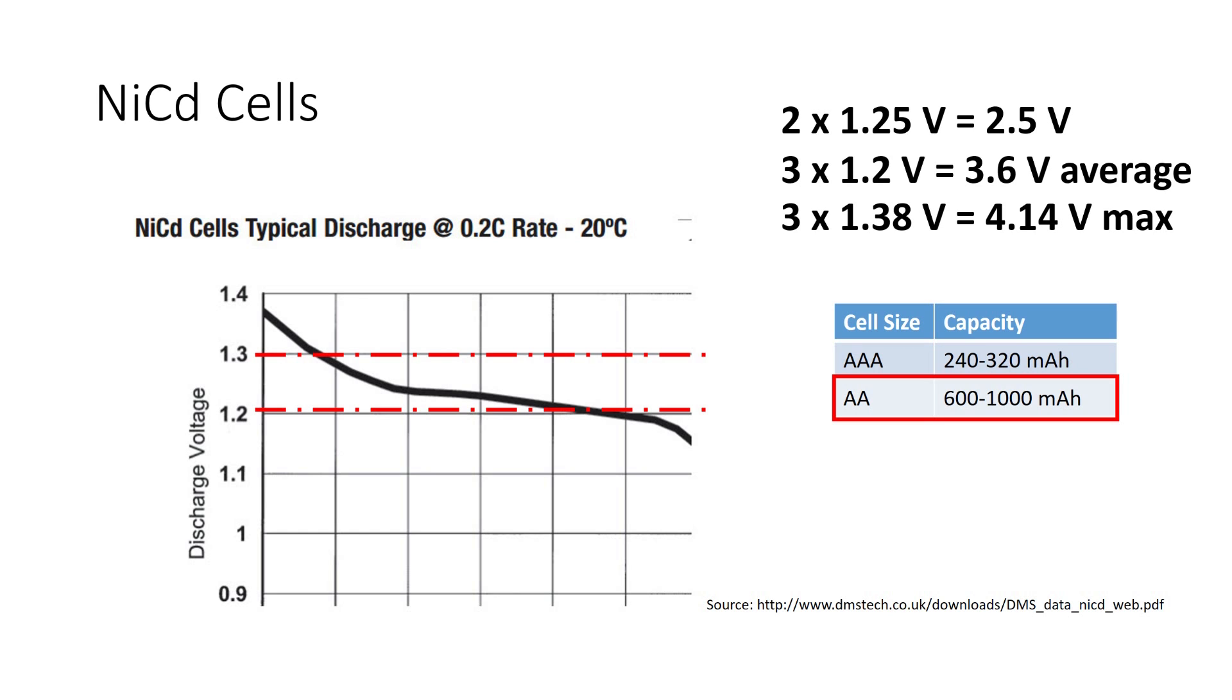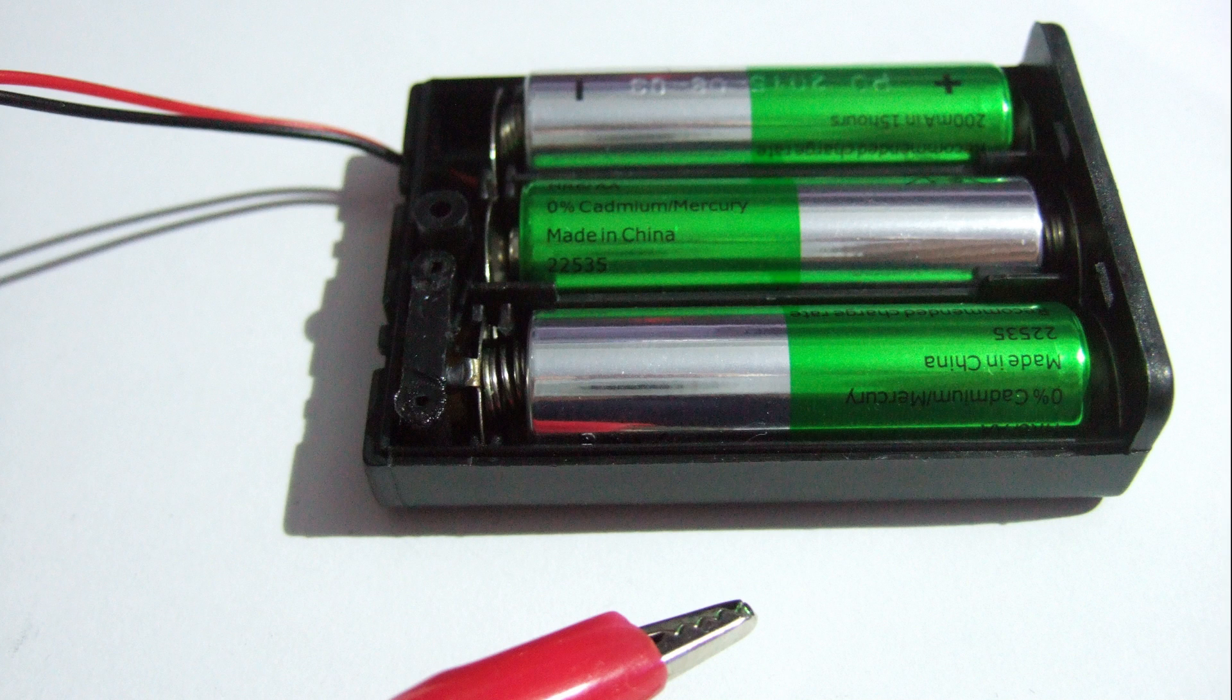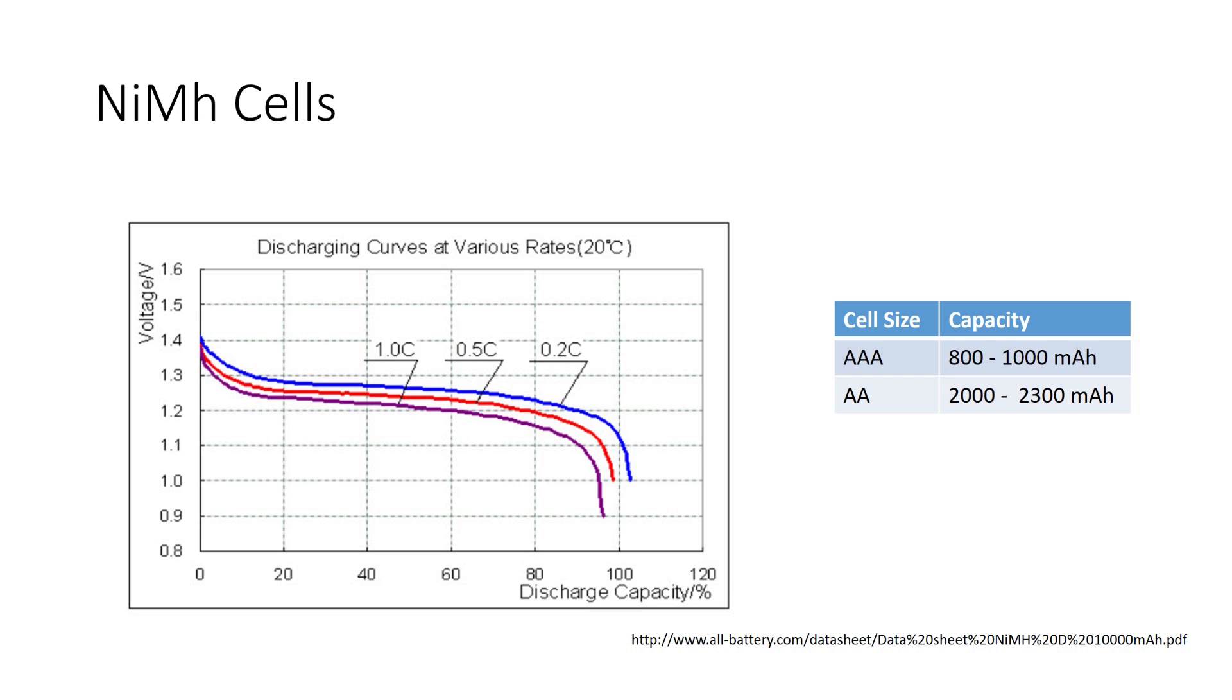In order to get more capacity, we go on to technology number three, the Nickel-Metal Hybrid batteries. Their voltage curve is very similar to the Nickel-Cadmium batteries. The capacity, however, is more than the double, and they are also rechargeable.